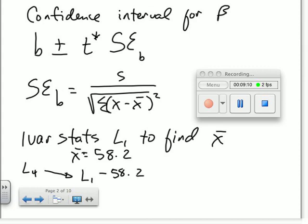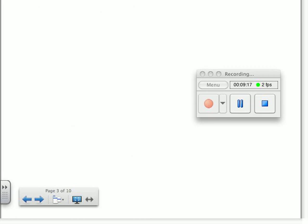Then you need to do one var stats. Everybody, can I change the page? So now one var stats of list four. And what do we get for the sum of X squared? Questions on that? All right. So we have everything we need to find the standard error of the slope.